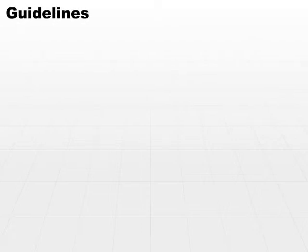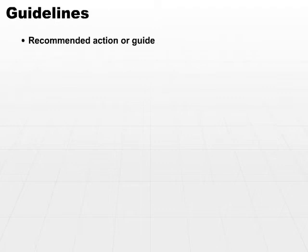What is a guideline? A guideline is a recommended action or a guide. It doesn't give you the step-by-step instructions, but it says here's kind of what you need to do. Typically, they're not mandatory. You work within standards, but you use these guidelines to figure out the direction you need to go or what you need to do to accomplish a task.